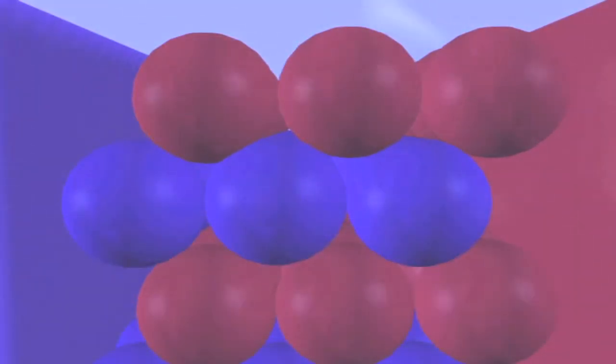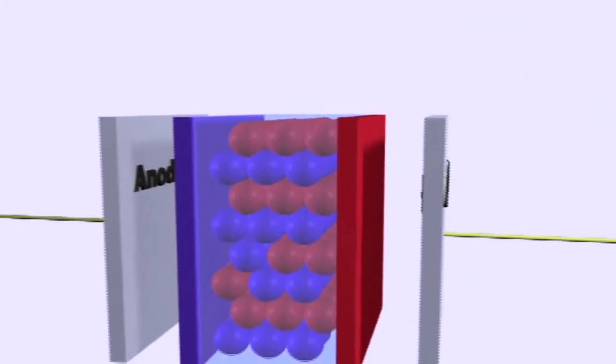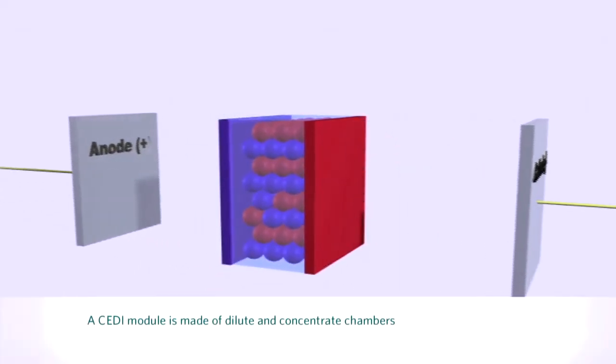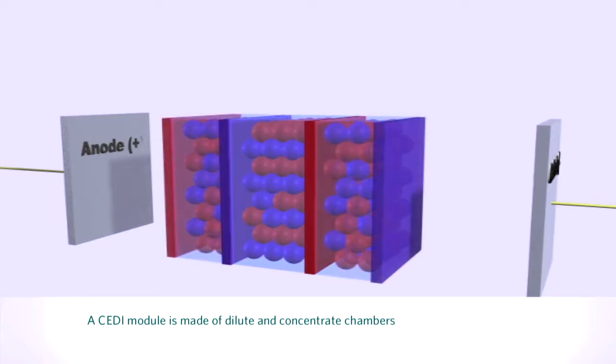Taking a step back to look at how an IonPure CEDI module is constructed, we can see that if we move the electrodes farther apart and continue to add resin beads sandwiched between the cation and anion-selective membranes,